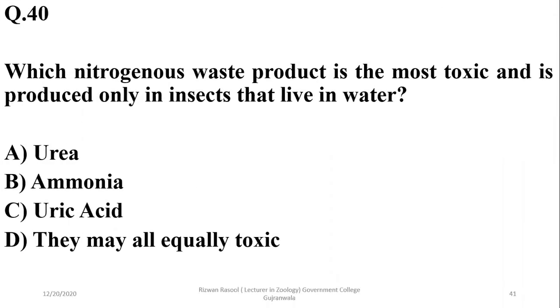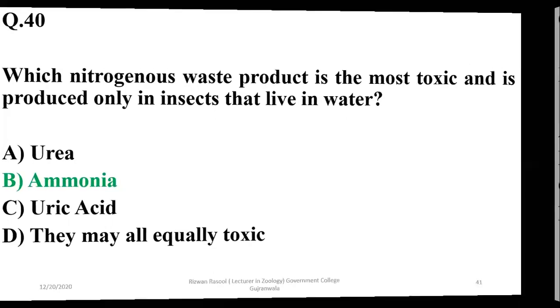Question 40: The most toxic nitrogenous waste product depends on size. Ammonia is the smallest in size compared to urea and uric acid, and it is more toxic than the others. So the right option is B — ammonia.